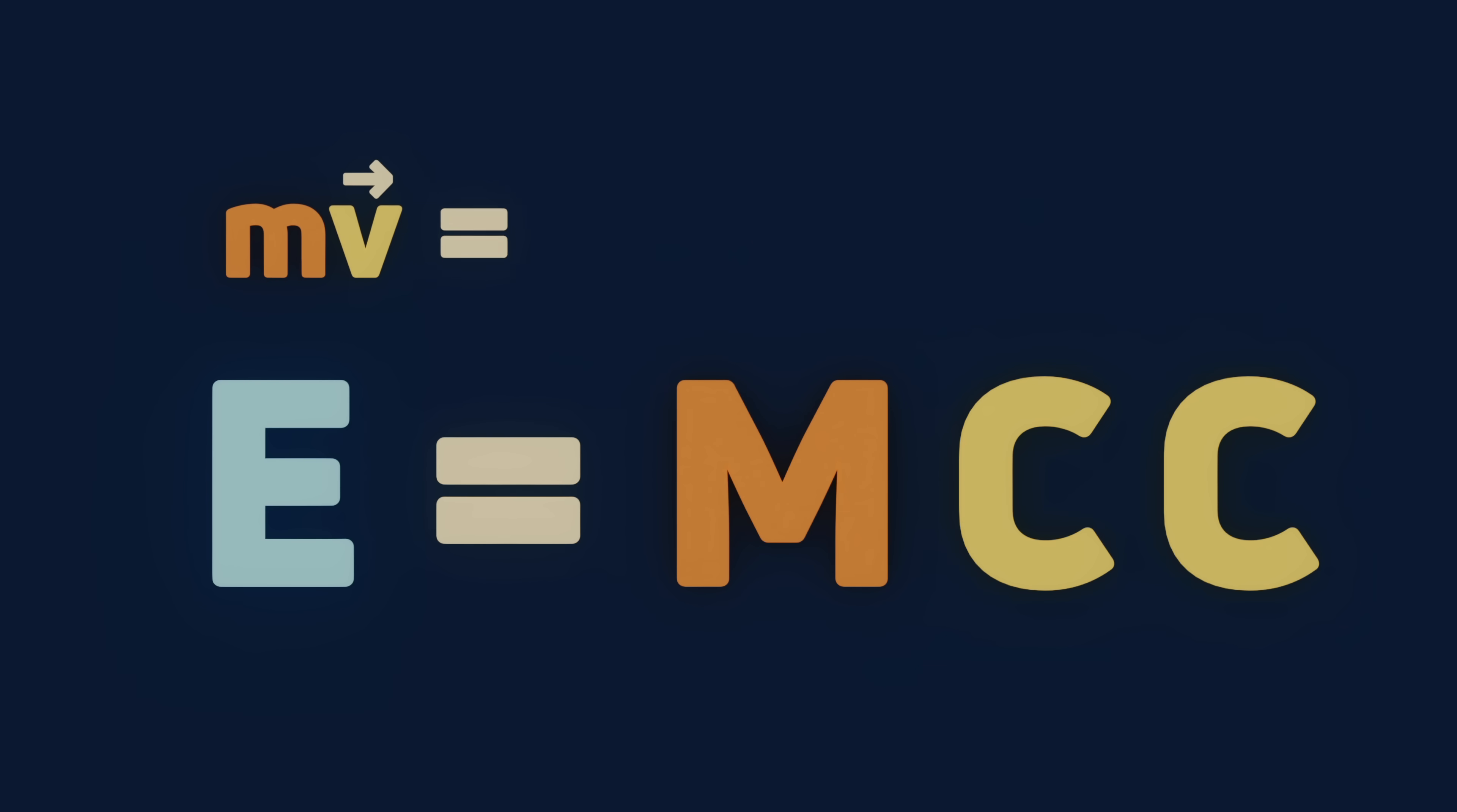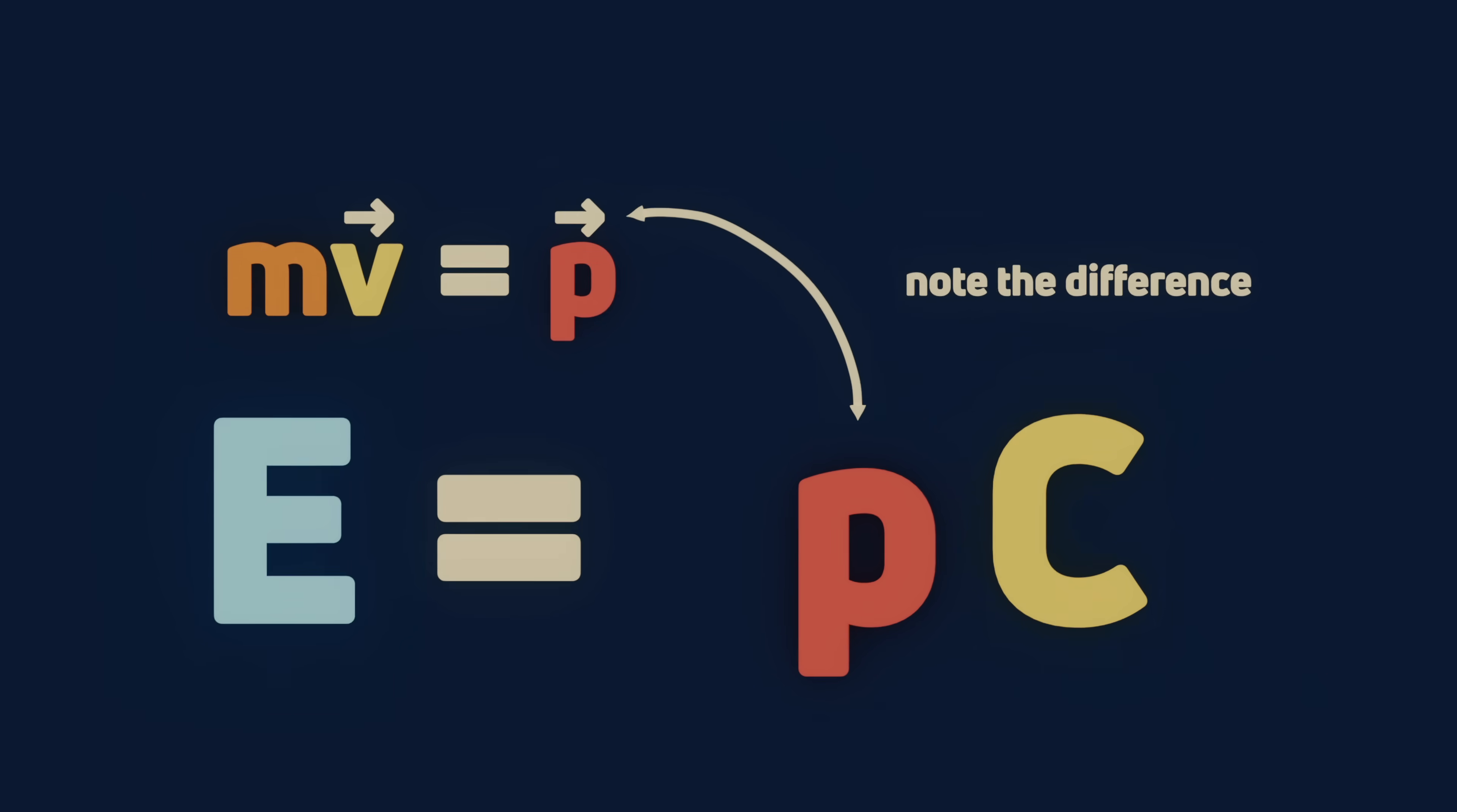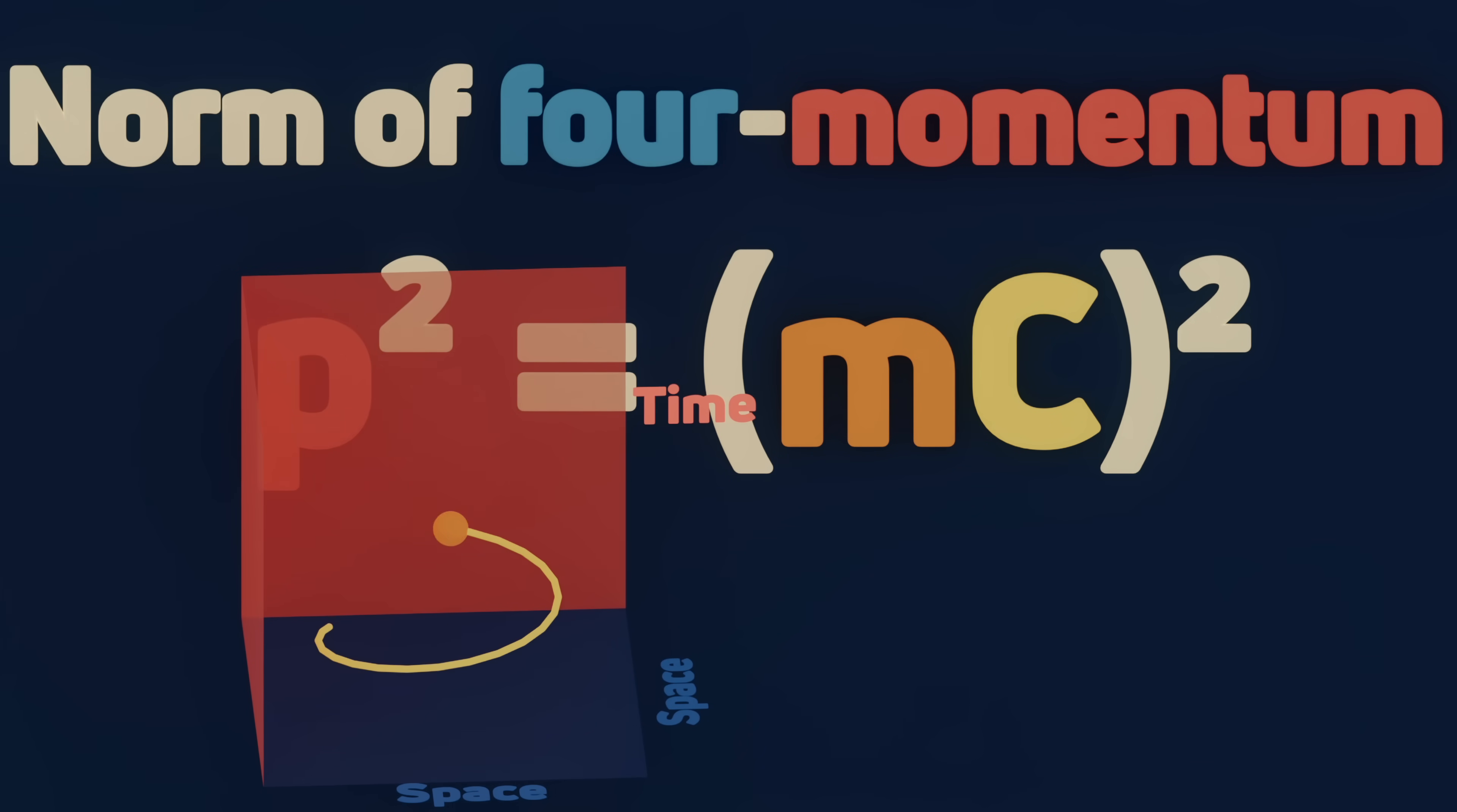Well, mass times velocity is just momentum. So this describes a directionless momentum. This is also known as the norm of four-momentum, the momentum of an object through space-time or Minkowski space, something we don't need to go into today.